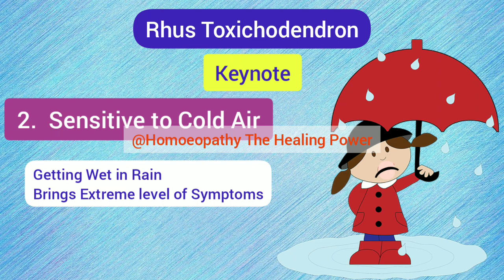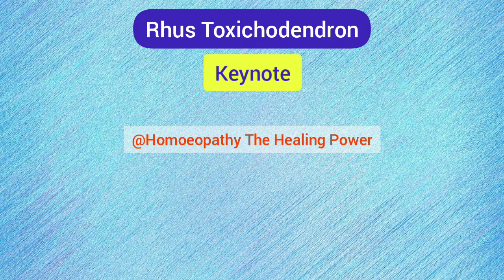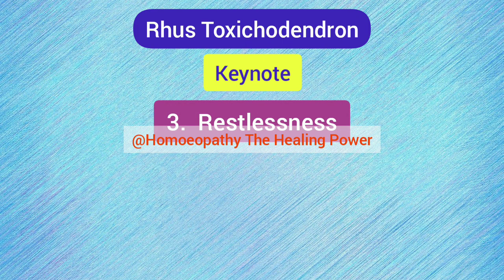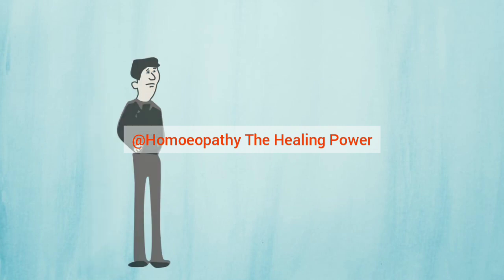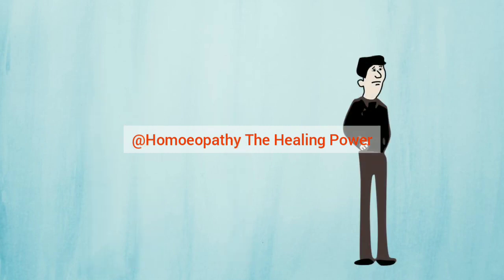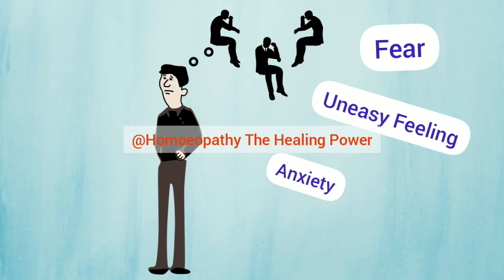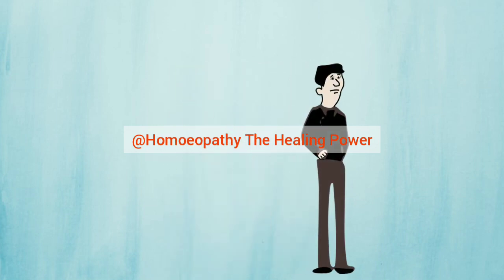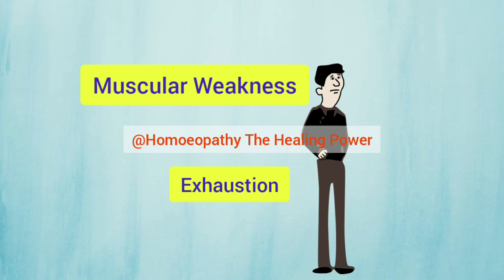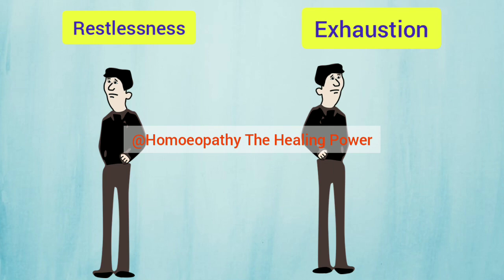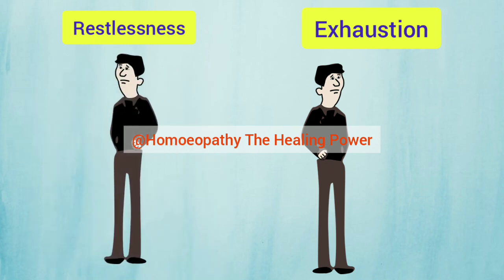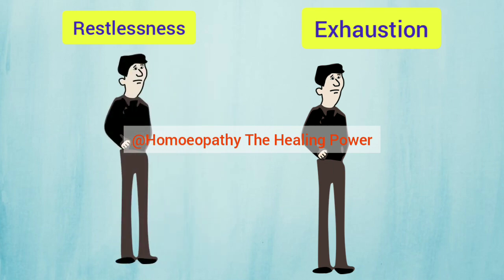The third and most important keynote of Rhus Tox is restlessness. Restlessness is seen because continuous motion ameliorates the condition, so the patient continuously moves here and there. Also, restlessness occurs because of anxiety, apprehension, and uneasy feeling. However, this restlessness causes muscular weakness and exhaustion, which in turn produces more symptoms — so at the end, the patient finds no relief and never finds ease or rest.